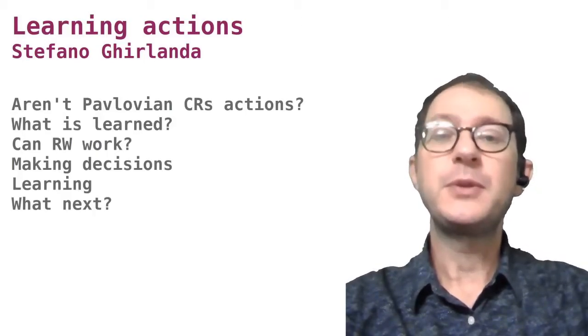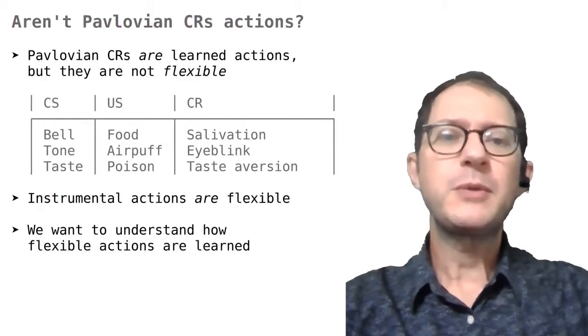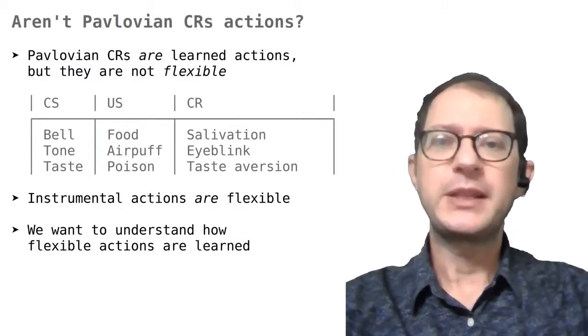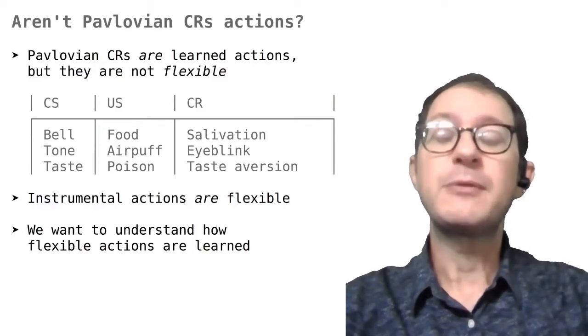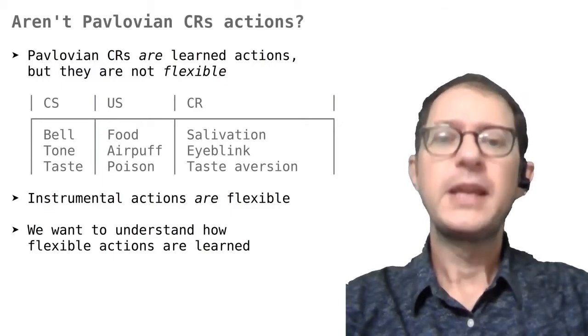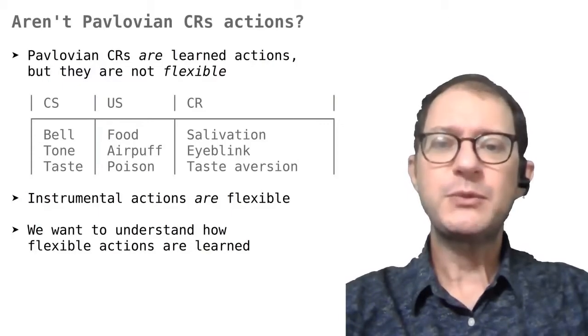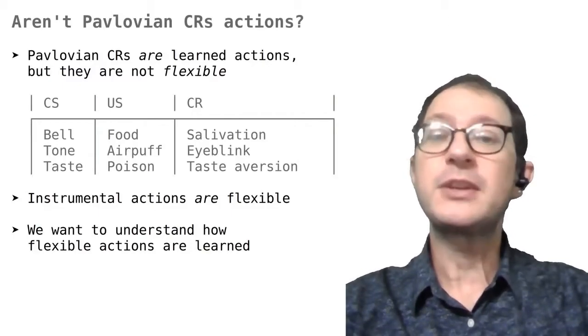We won't need a lot of new ideas for this. First of all, you may wonder why we need anything new at all to understand how animals learn in instrumental conditioning. Don't we already know how animals learn actions from our study of Pavlovian conditioned responses? It is true that Pavlovian CRs are actions, but one reason why Pavlovian conditioning is traditionally studied separately from instrumental conditioning is that Pavlovian actions are not flexible.